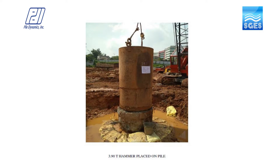The test consists of instrumenting the pile top with strain gauges and accelerometers and dropping a dead weight on the pile top, which is about one to two percent of the ultimate pile capacity to be proved — one percent for rock-socketed piles and two percent for friction piles.